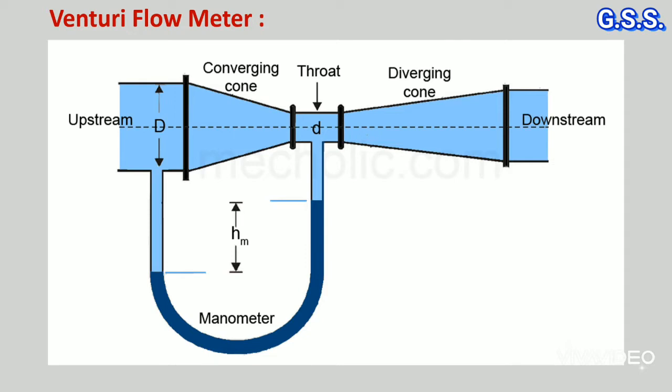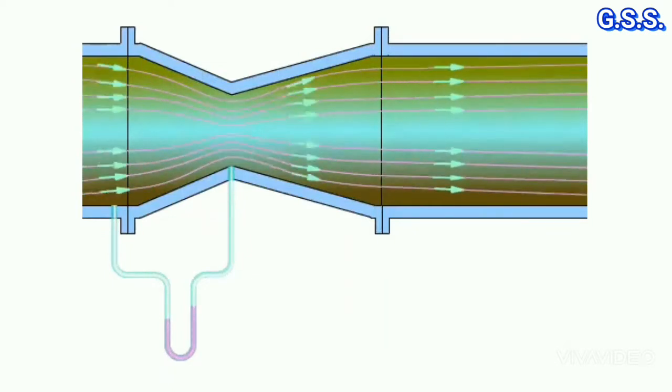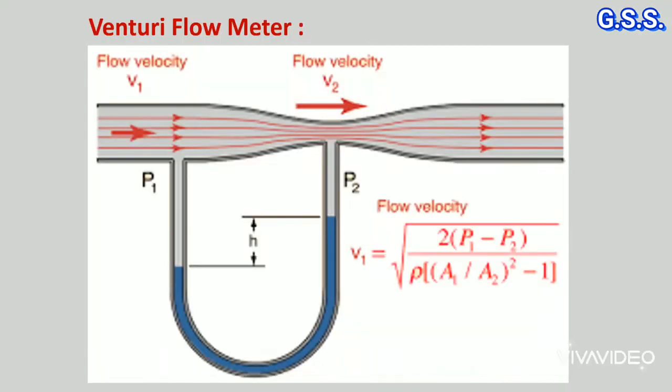Venturi flow meter works on Bernoulli's principle. In venturi flow meter, a converging and a diverging section of pipe is used. From the converging section to throat, velocity increases and pressure decreases. And from the corresponding pressure drop, volume flow rate is measured.